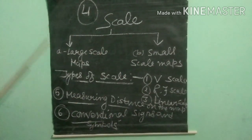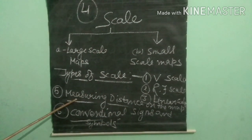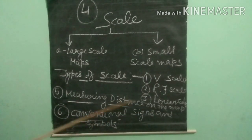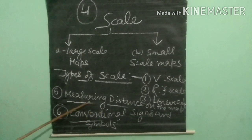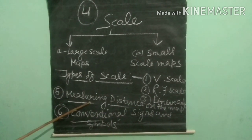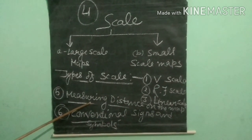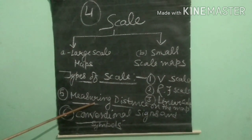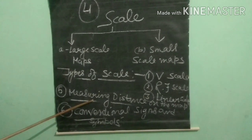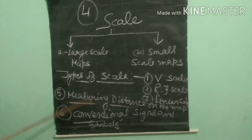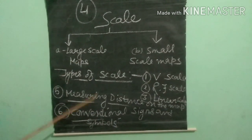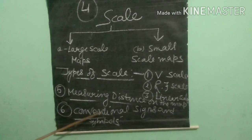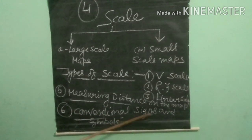The fifth topic is measuring distance on the map. Distance is measured in kilometers, meters, or centimeters, and is normally measured in a straight line with the help of a scale. Then we come to the sixth and last topic of this chapter: conventional signs and symbols.